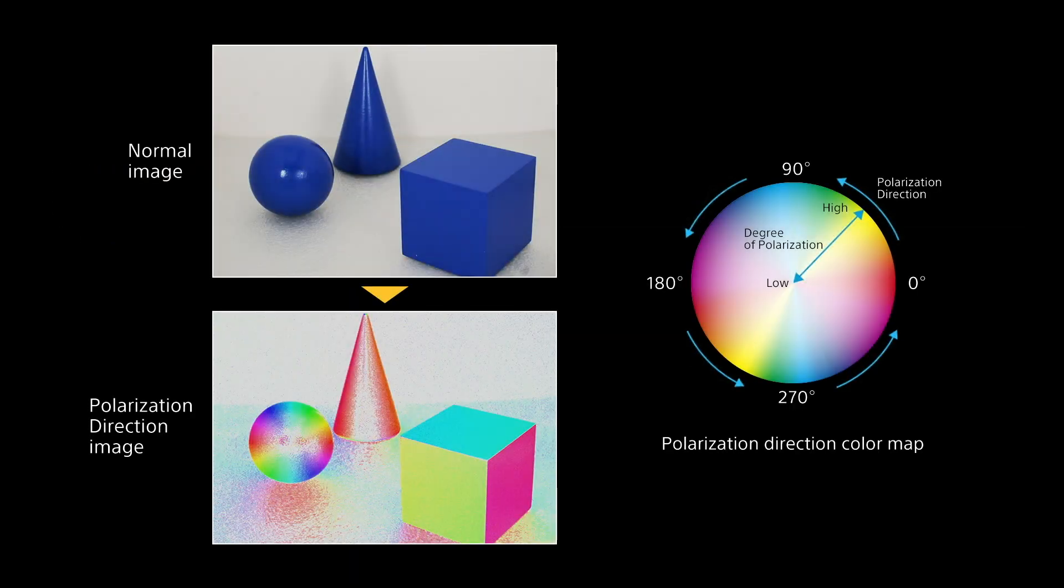For example, we can easily identify the shape of an object or detect scratches by making use of this polarisation information.